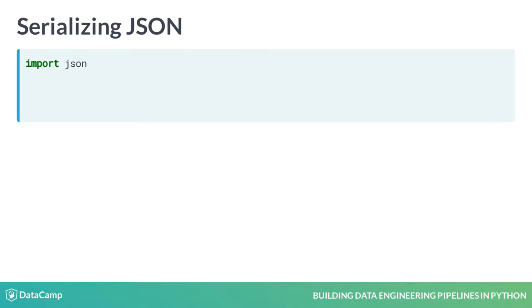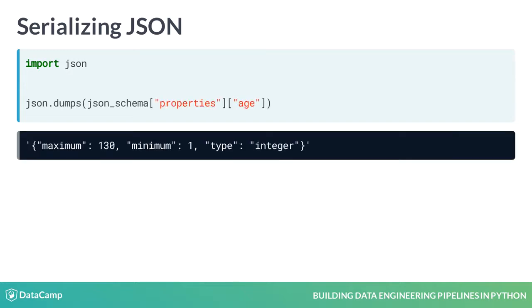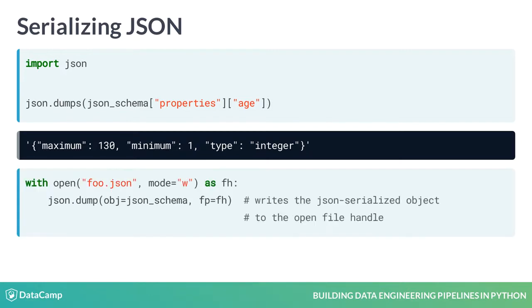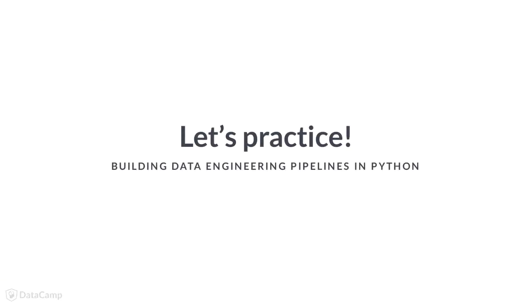JSON is a common format, not just in Singer, but in many other places. Python provides the JSON module to work with JSON. To get objects in your code serialized as JSON, you would call either json.dumps or json.dump. The former simply transforms the object to a string, whereas the latter writes that same string to a file. Now that we understand what JSON schema is and how Singer wraps it into messages, let's put this into practice with json.dump.